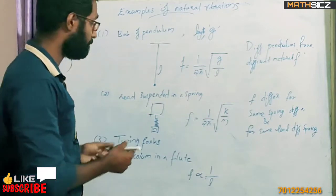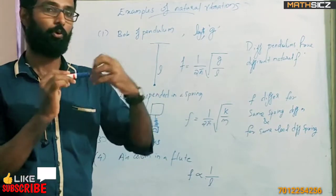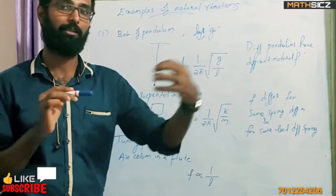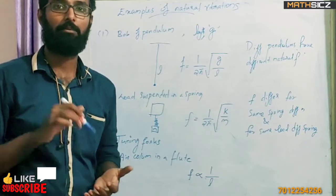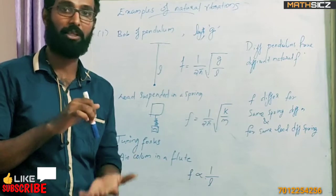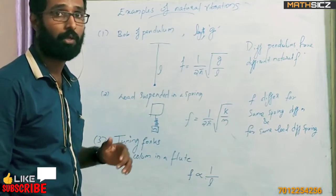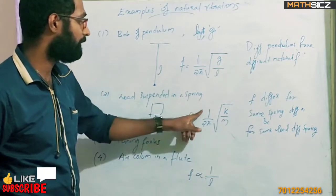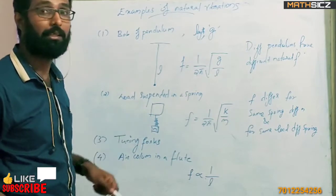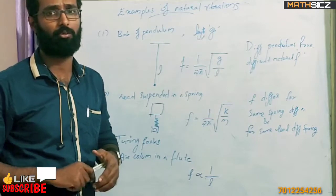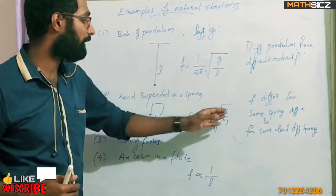The second example is a load suspended on a spring. We stretch the spring along the horizontal line, stretch it and compress it, and it vibrates. We can stretch and compress it — that is a natural frequency, natural vibration. The frequency is 1 by 2π into root of k by m. Here k is the spring constant, also called the force constant, and m is the mass suspended.